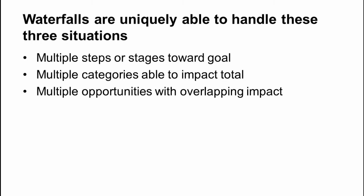The second is when multiple categories are able to impact the total. We just saw this with the McKinsey example, and we saw how well that worked. The last one is what I'm calling multiple opportunities with overlapping impact. That is, let's say you're trying to reach a goal, and there are four projects toward that goal. But those four projects aren't mutually exclusive — you can do all four, or none, or one, two, or three, and those impacts overlap. When that's the situation, the waterfall should once again be your default option.